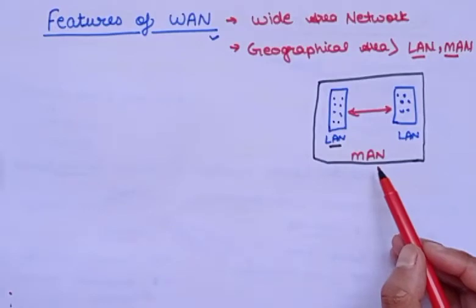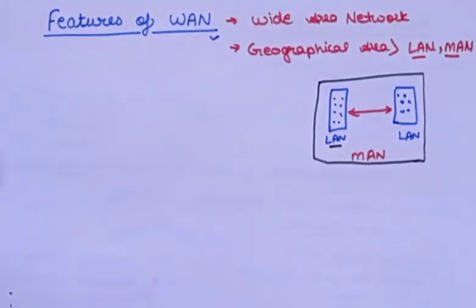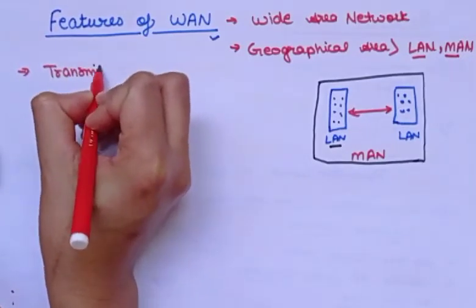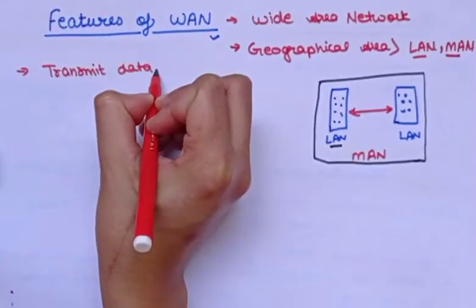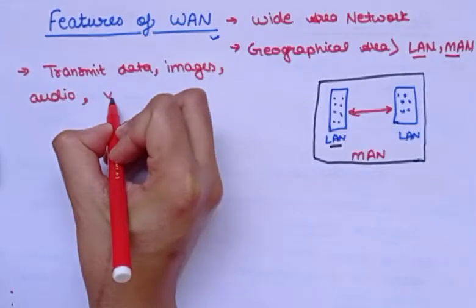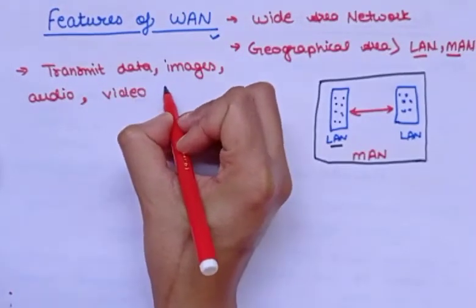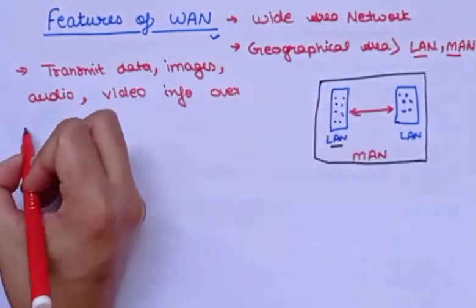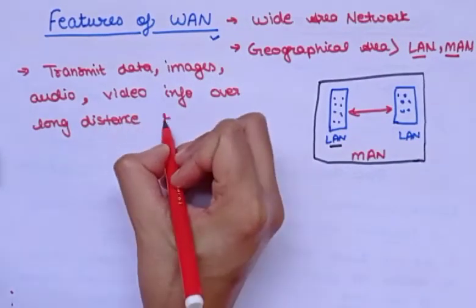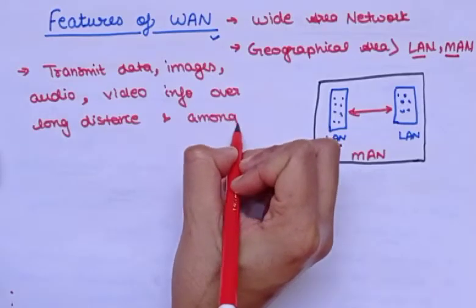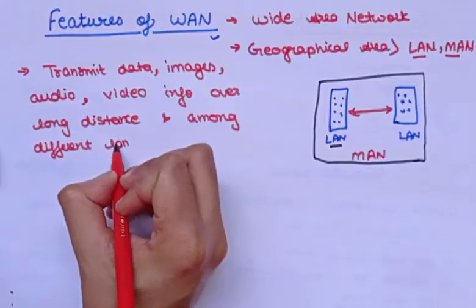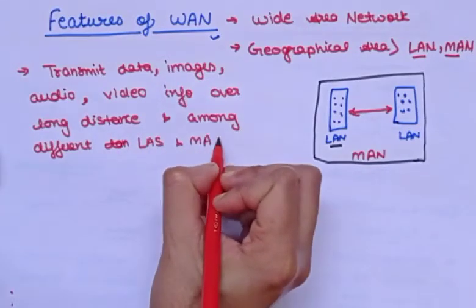WAN includes the technologies to transmit data. With the help of WAN we can transmit data, images, audio, video, and information over long distances and among different LANs and MANs.